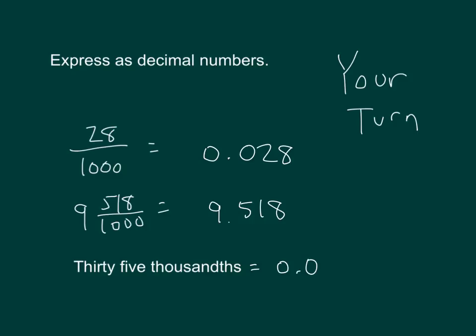And with that word form one, hopefully you were able to write 35 thousandths. Make sure your decimals are in the correct spot, so that you have these numbers in the right place.